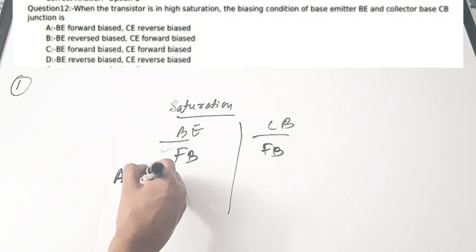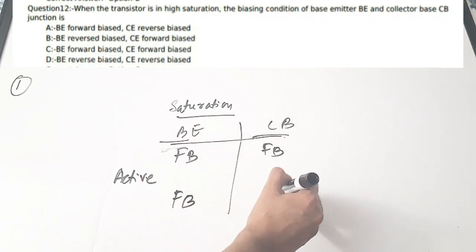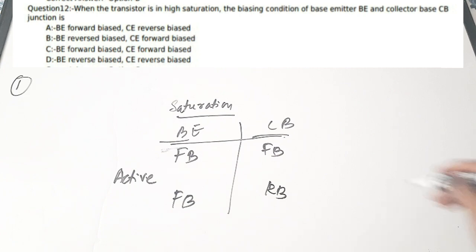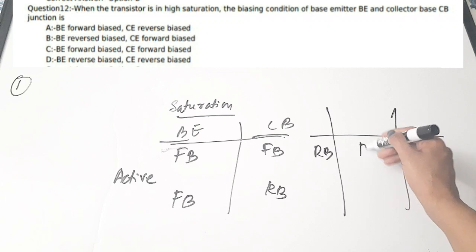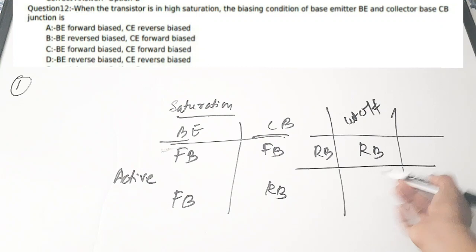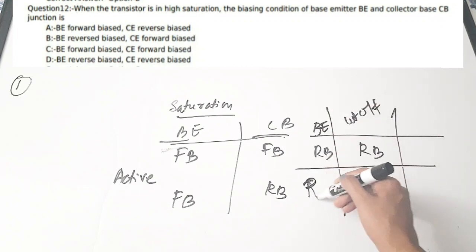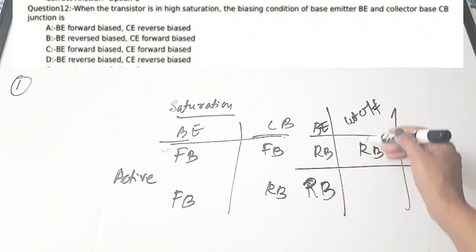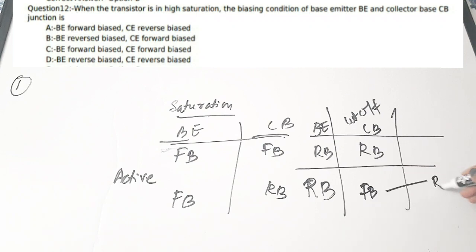For the active region, the base-emitter junction is forward biased and the collector-base junction is reverse biased. When both junctions are reverse biased, it is called cutoff. When the reverse happens — base-emitter is reverse biased and collector-base is forward biased — it is called the reverse active region.